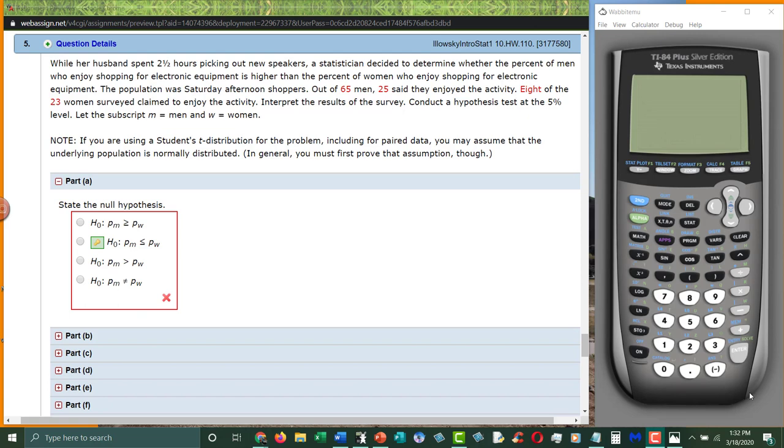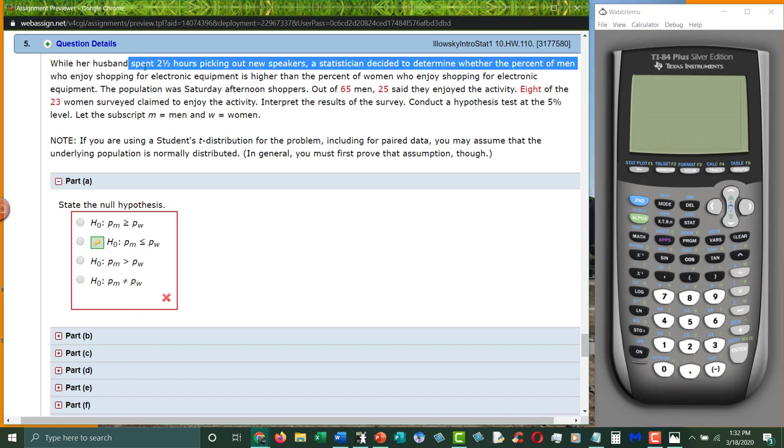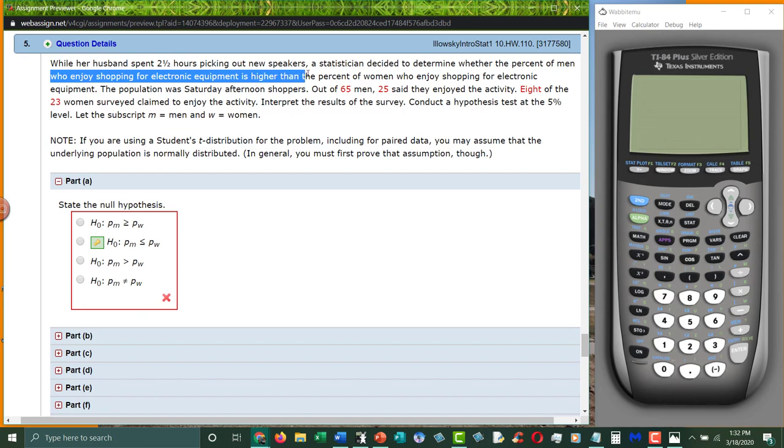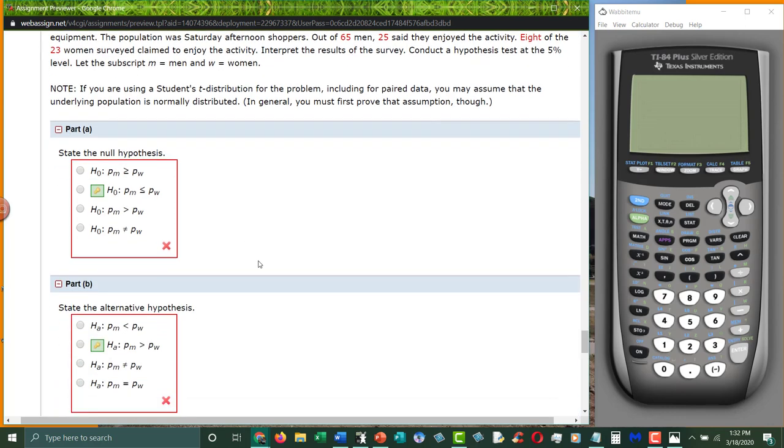The subscription M is men and W is women. She's saying that men enjoy shopping for electronic equipment more than women. This is the alternative hypothesis - the probability for men is higher than the probability for women. Therefore, the null must be everything else. If this is greater than, the null must be less than or equal to.